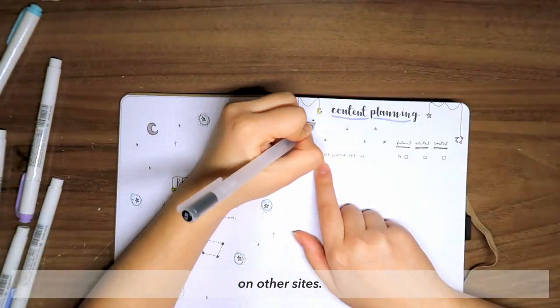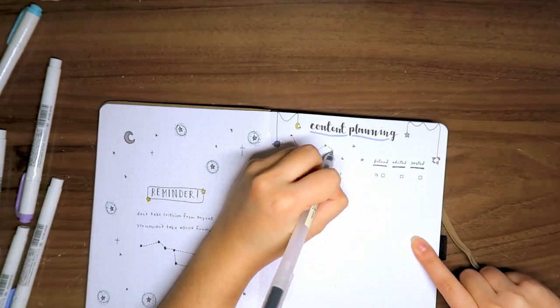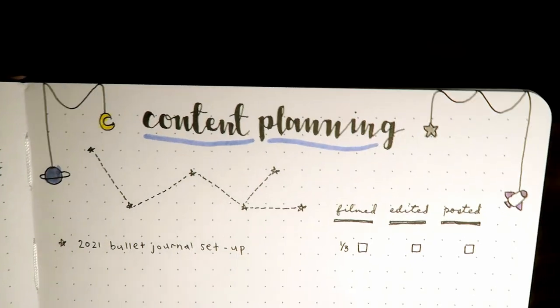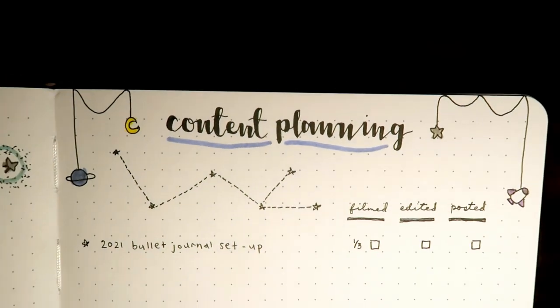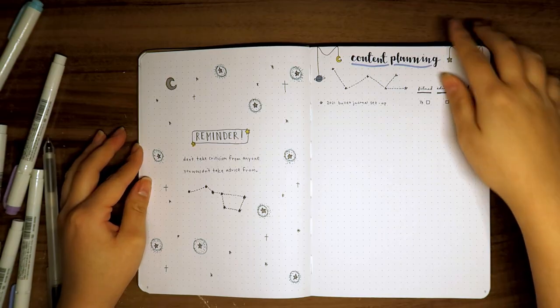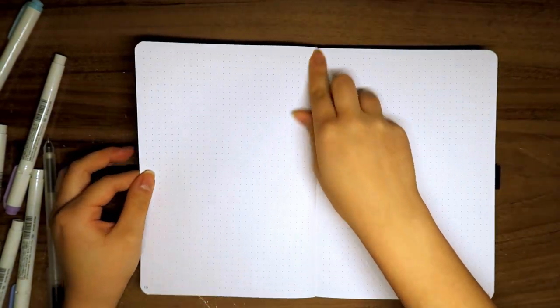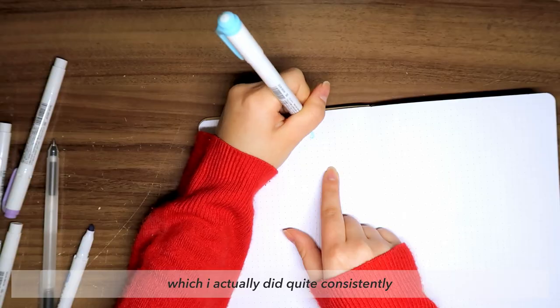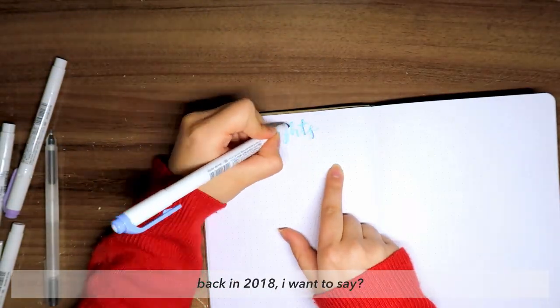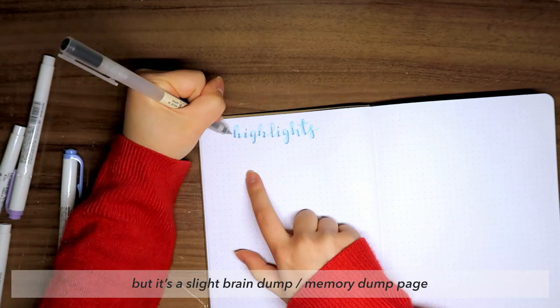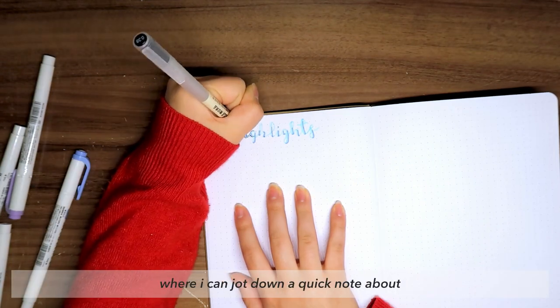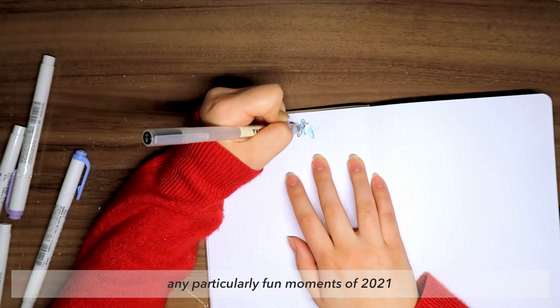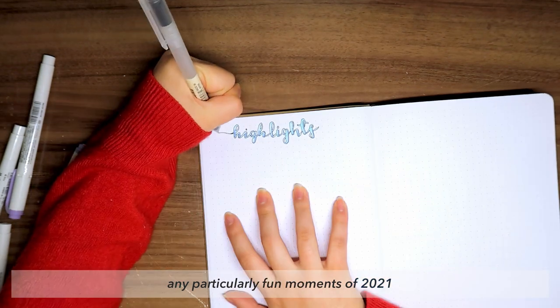Getting close to the end here, I added a page called 'highlights,' which I actually did quite consistently back in 2018, I want to say. But it's a slight brain dump, memory dump page where I can jot down a quick note about any particularly fun moments of 2021 that I want to make note of and look back on.